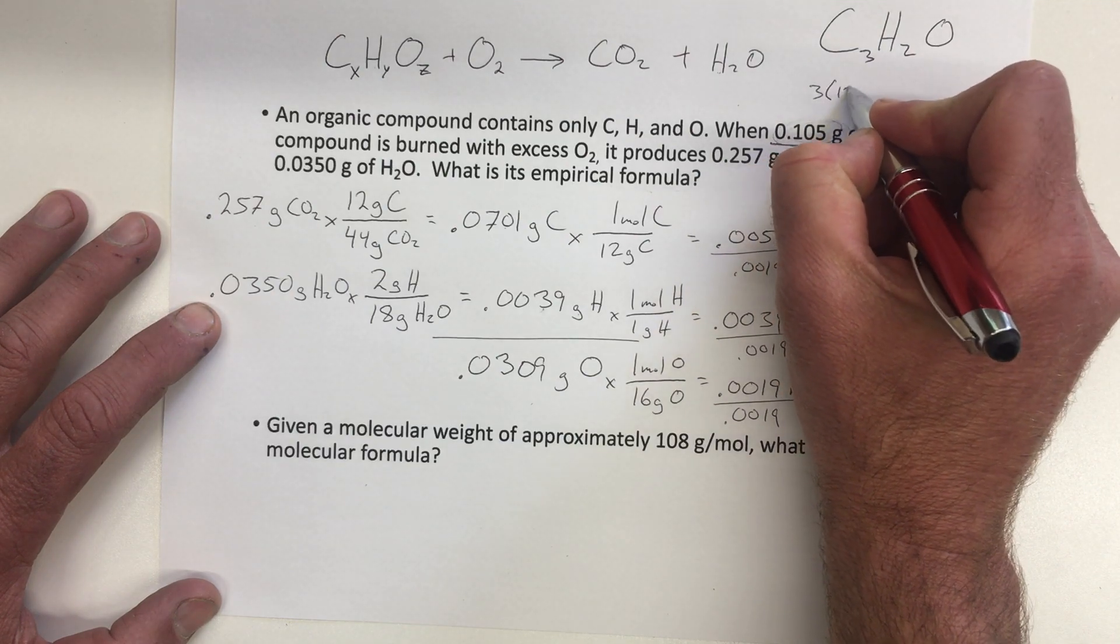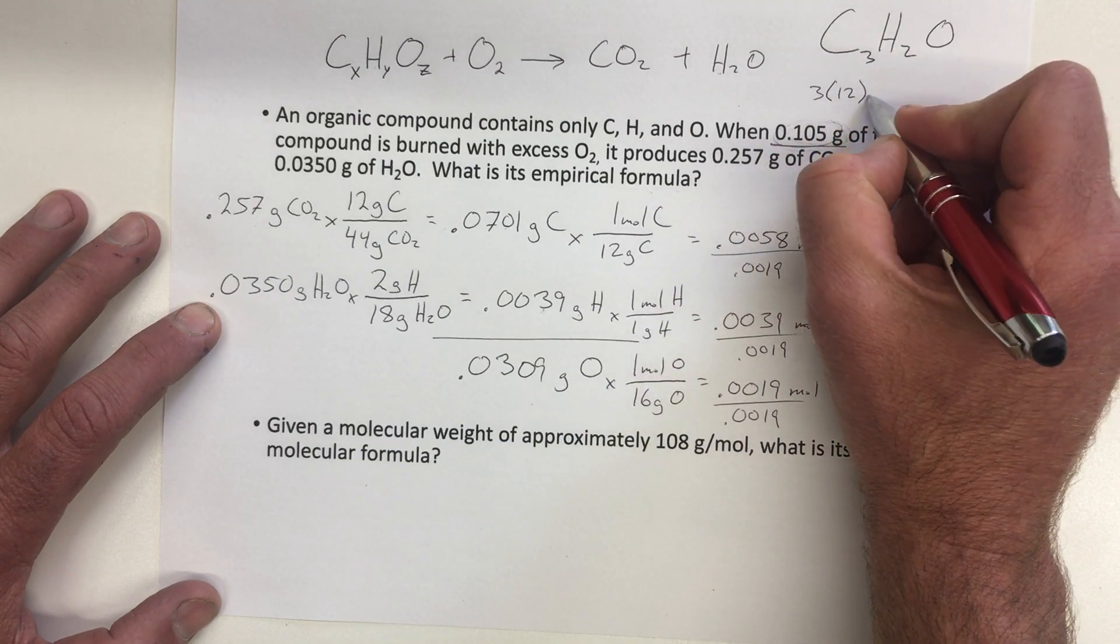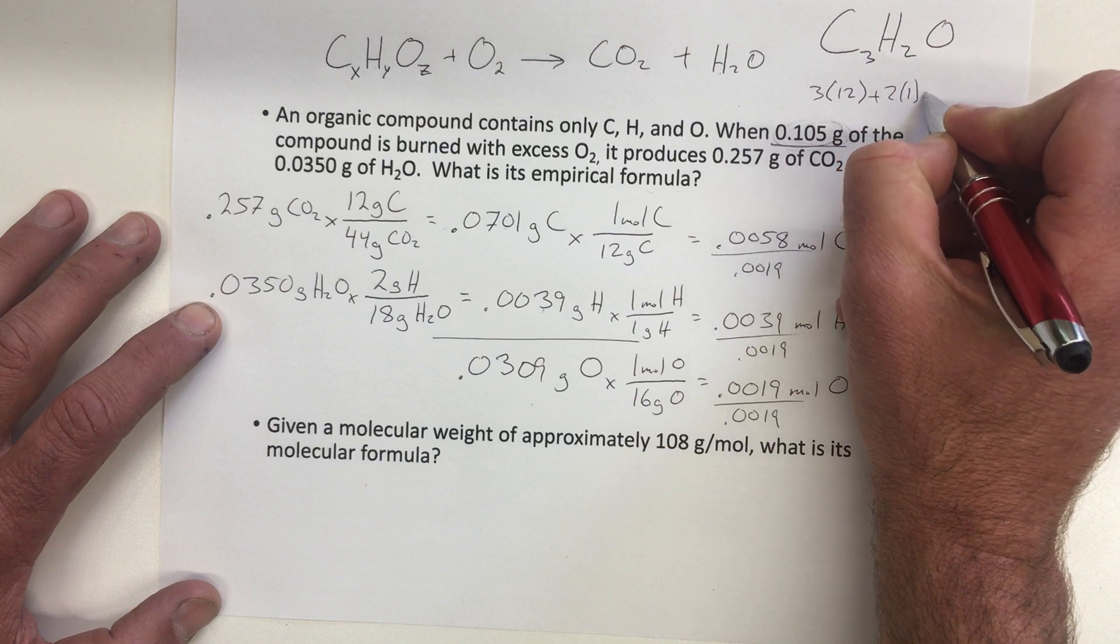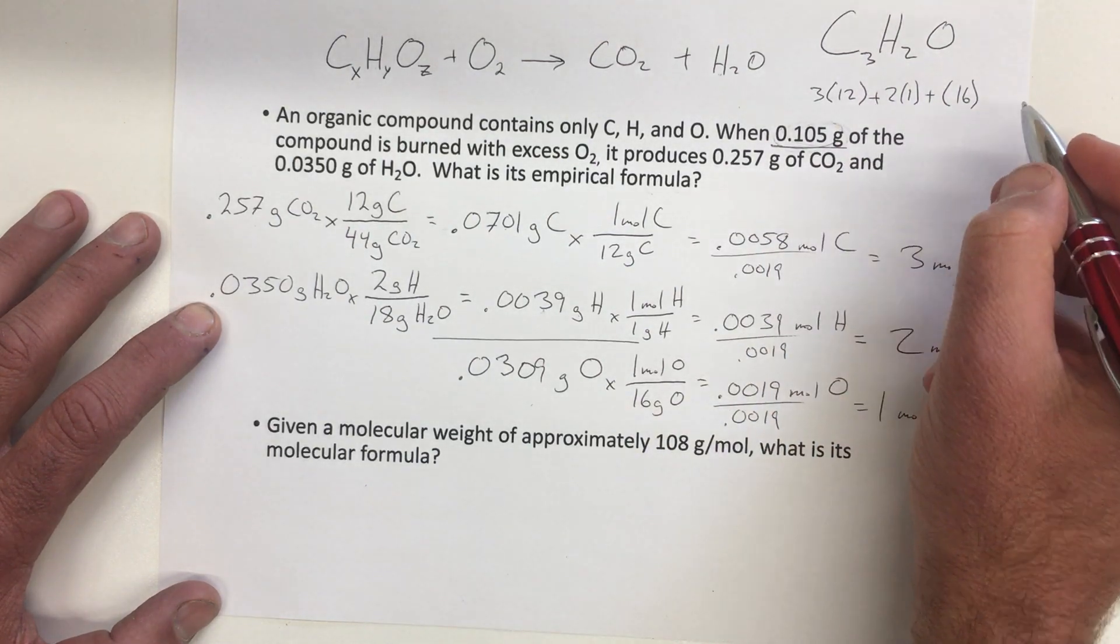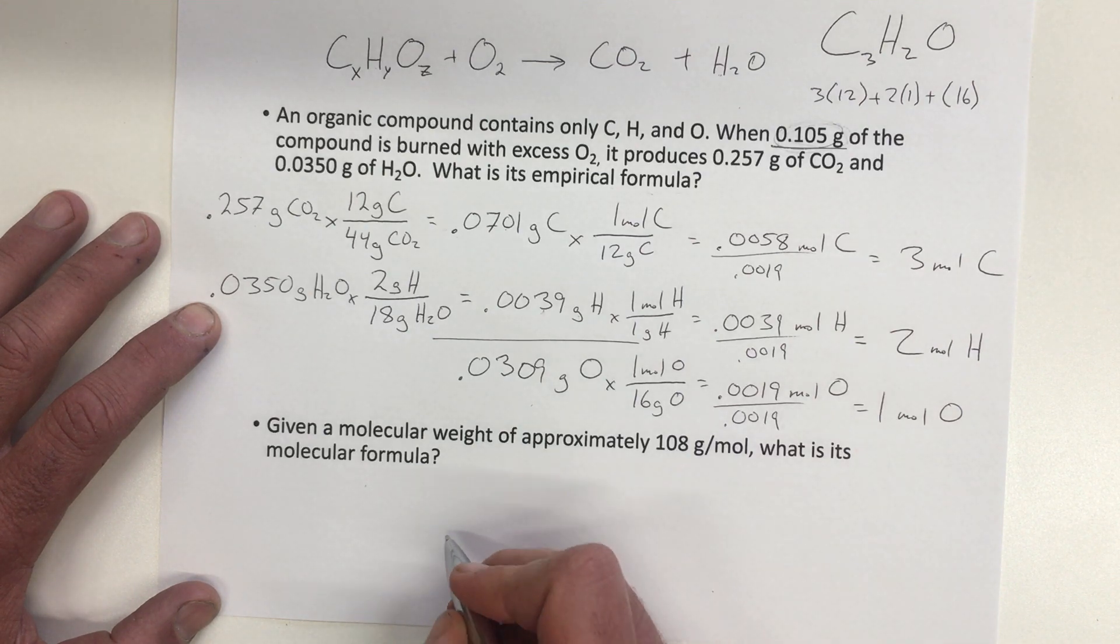So we'll do 3 times 12 for the carbons, plus 2 times 1 for the hydrogens, plus 16 for the oxygen. And when you do that, you get 54.